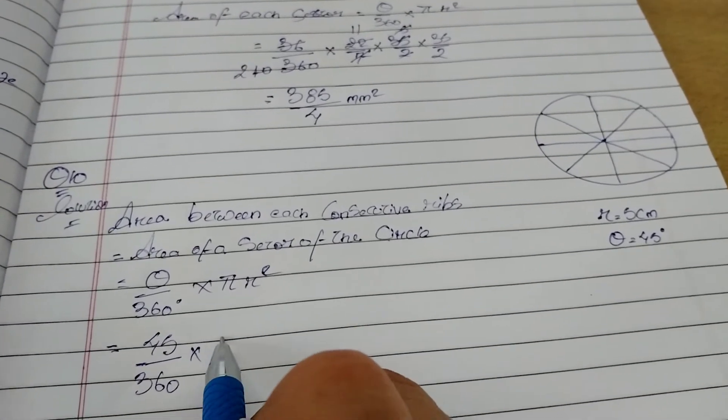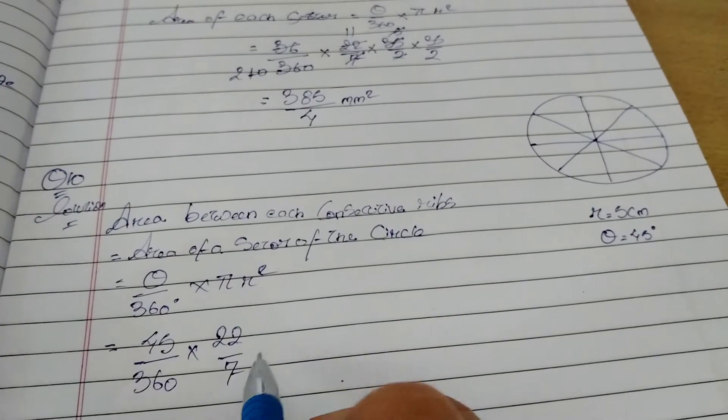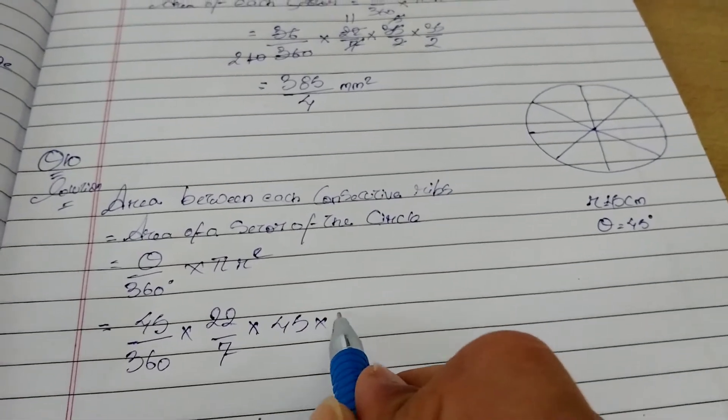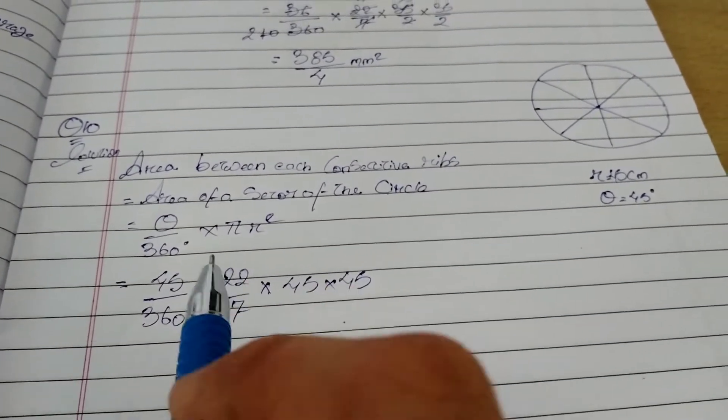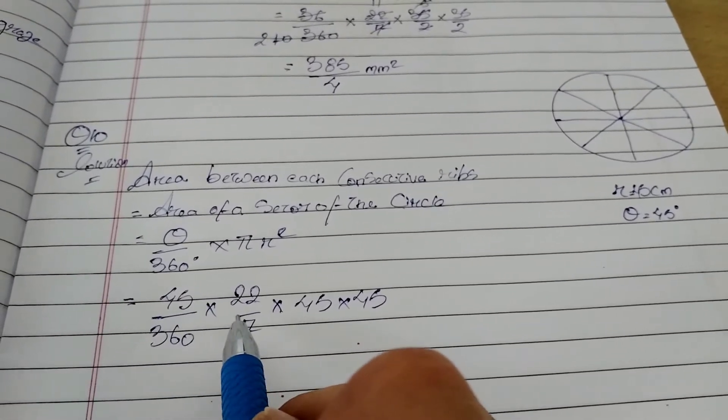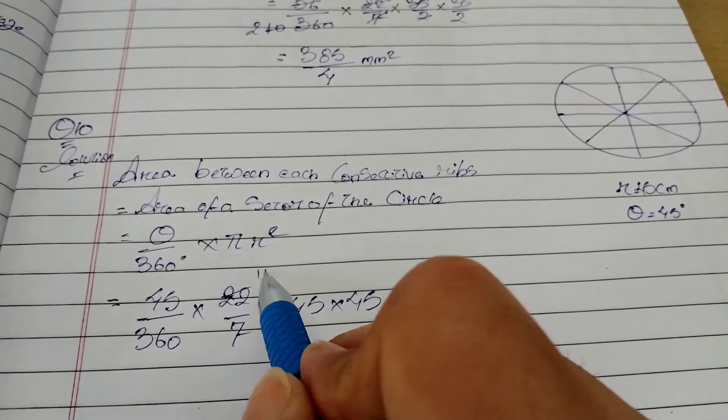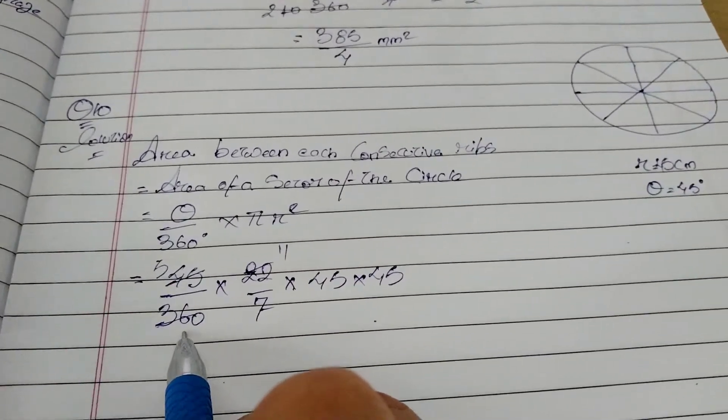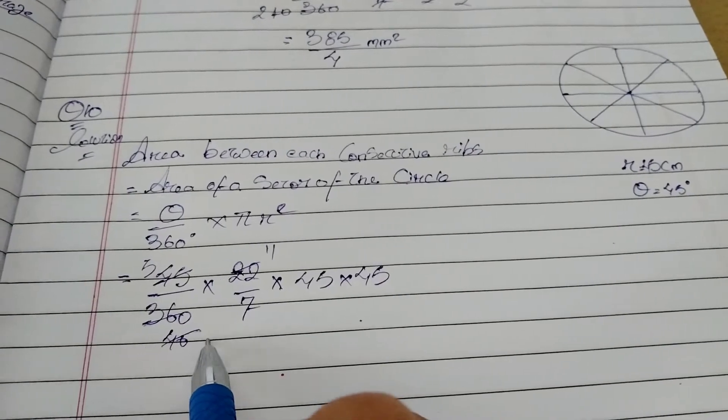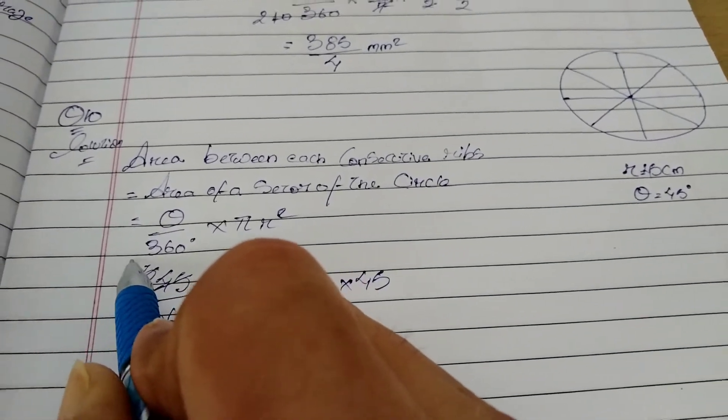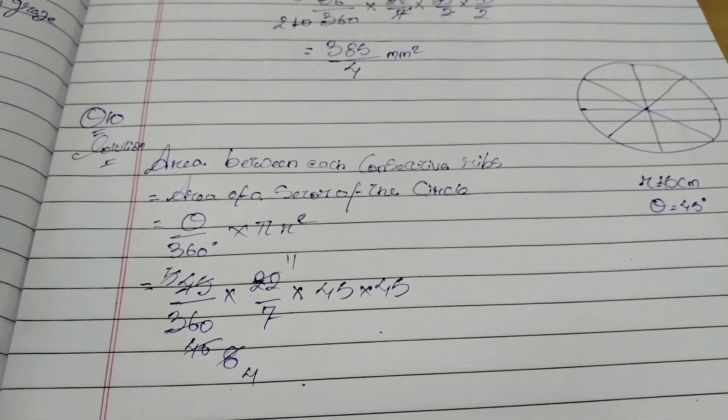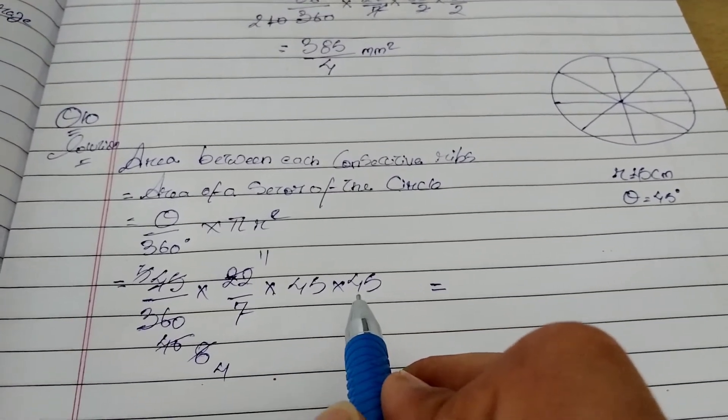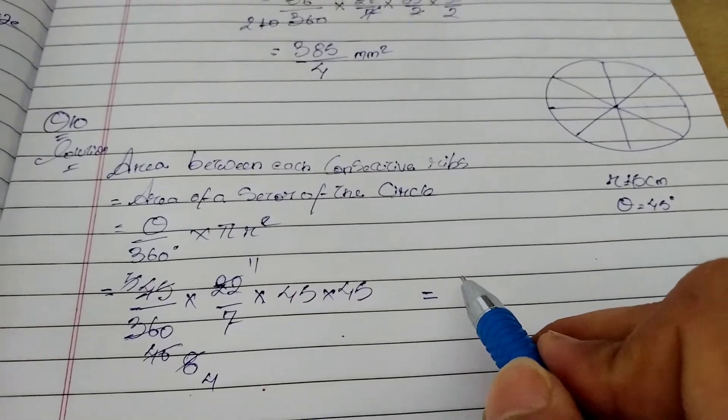Into π, 22 by 7, into radius 45. Okay, 45 into 45. Let's do the cancellation. Can we cut this? Yes. Let me just remove this. 11 into this also can be cut, 5.